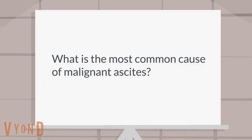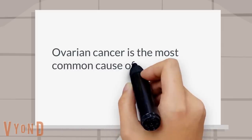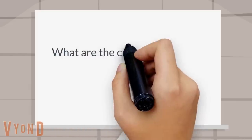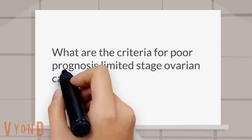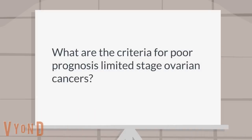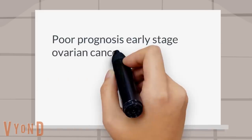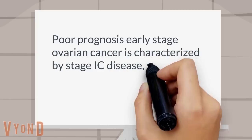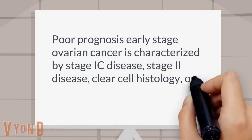What is the most common cause of malignant ascites? Ovarian cancer is the most common cause of malignant ascites. What are the criteria for poor prognosis in limited stage ovarian cancers?